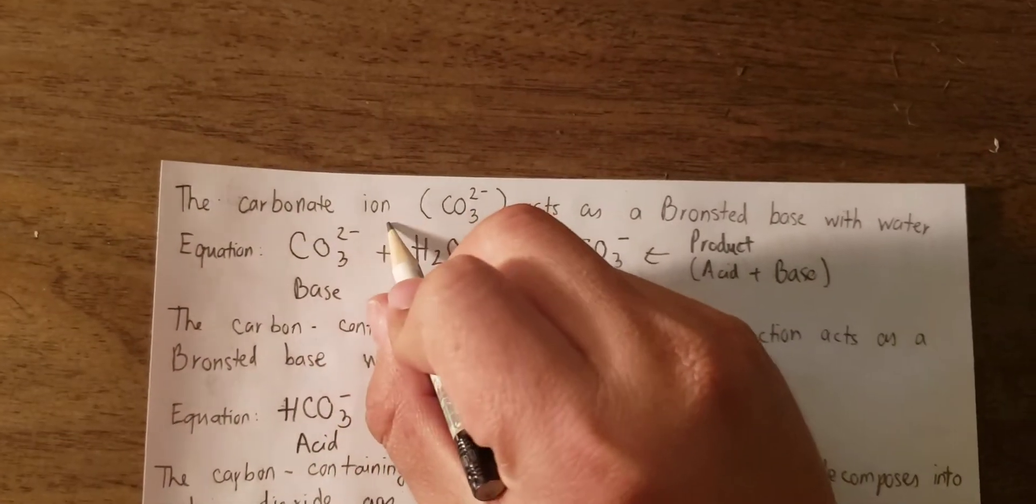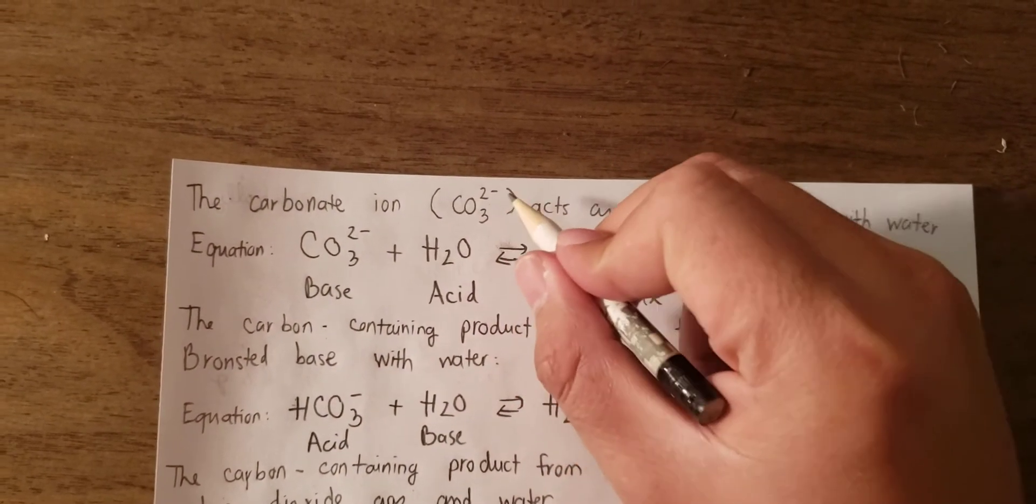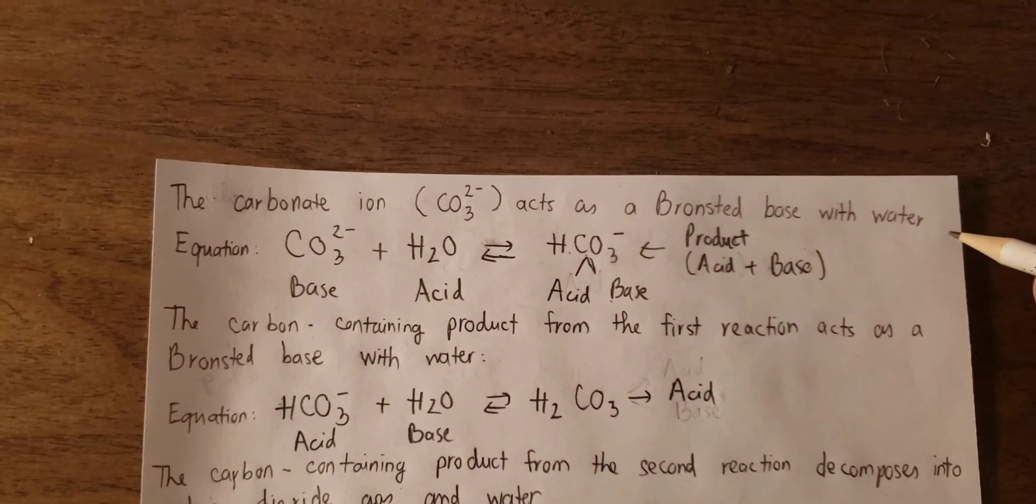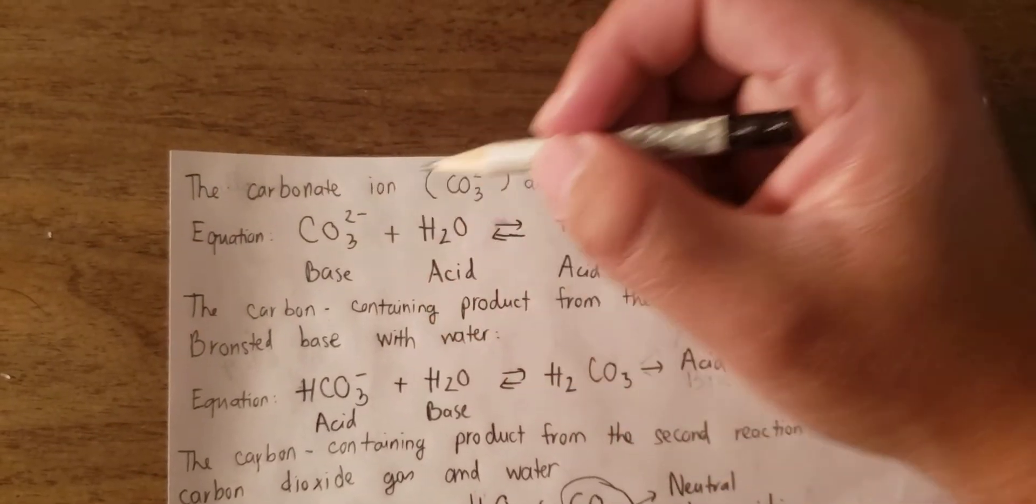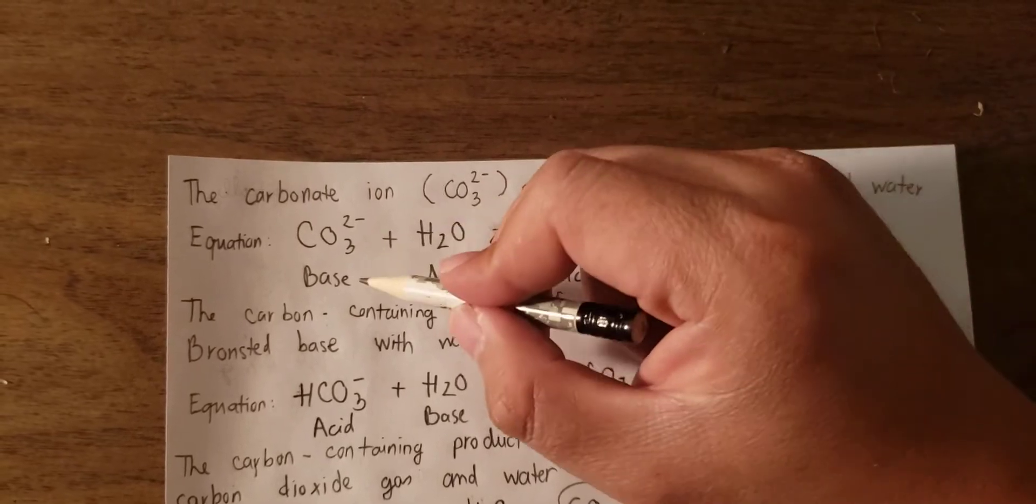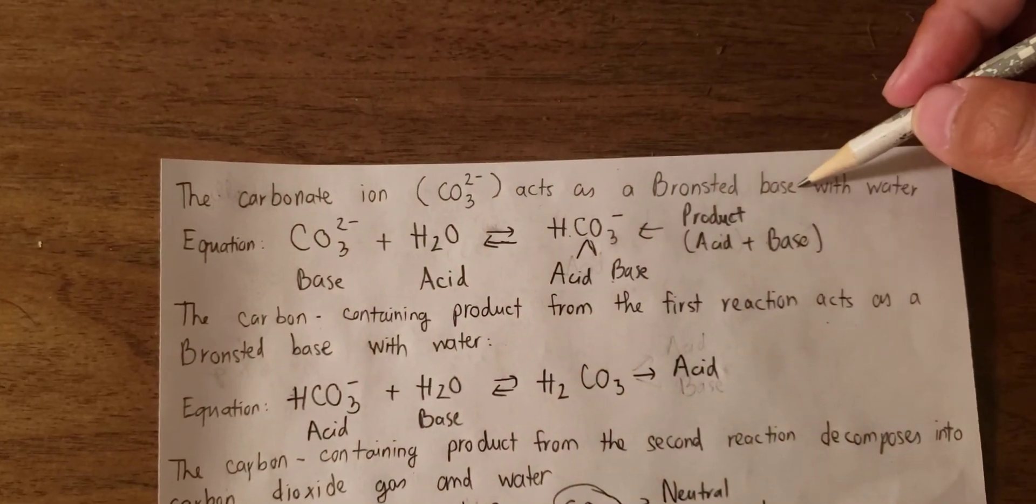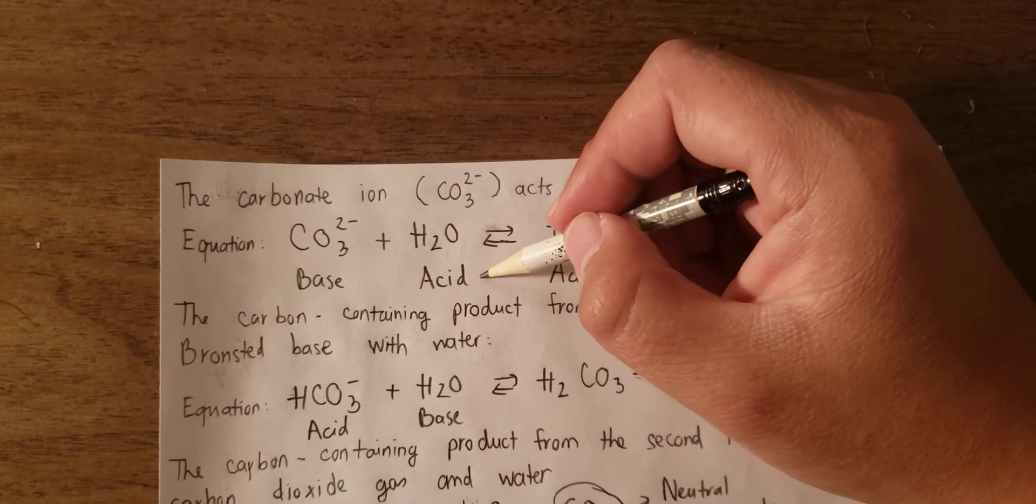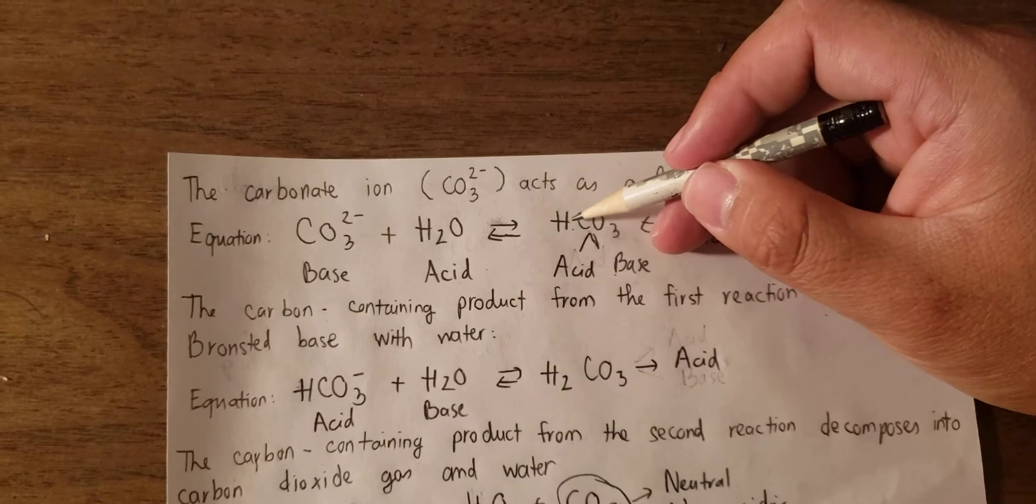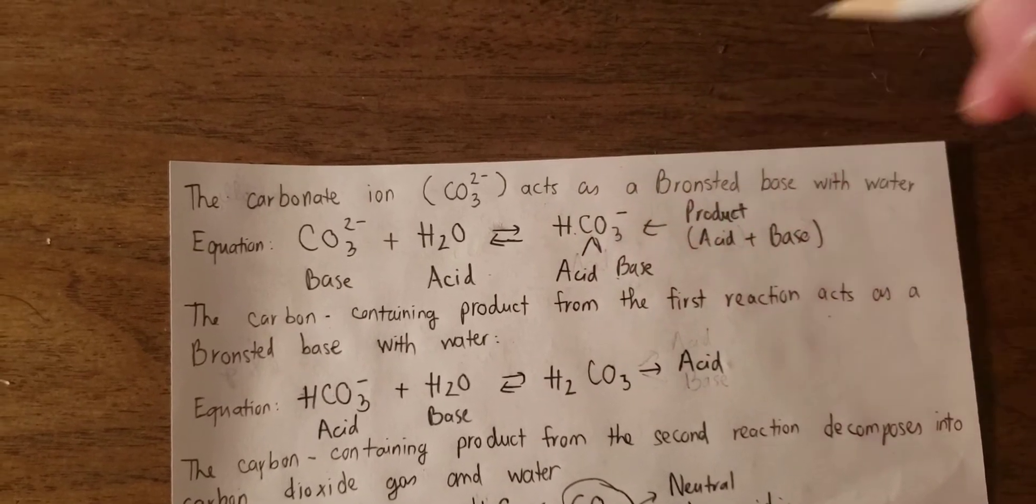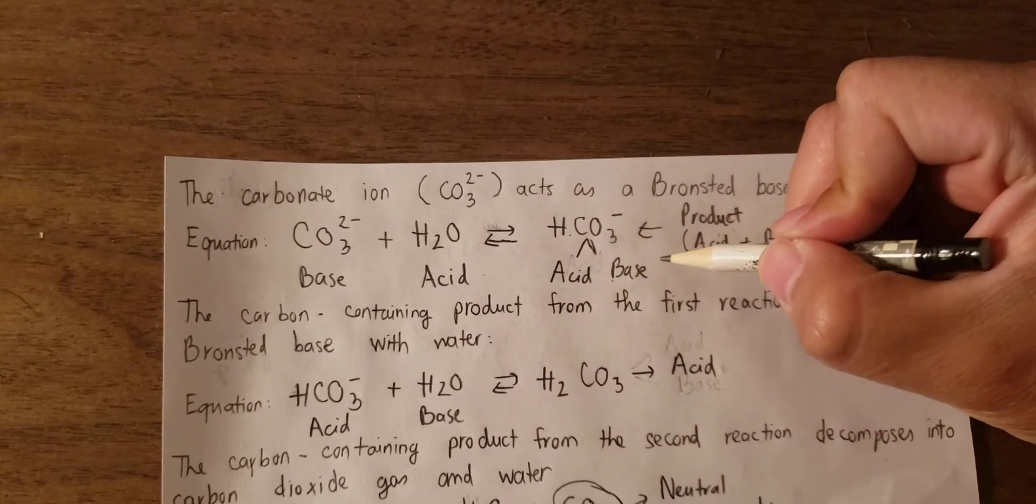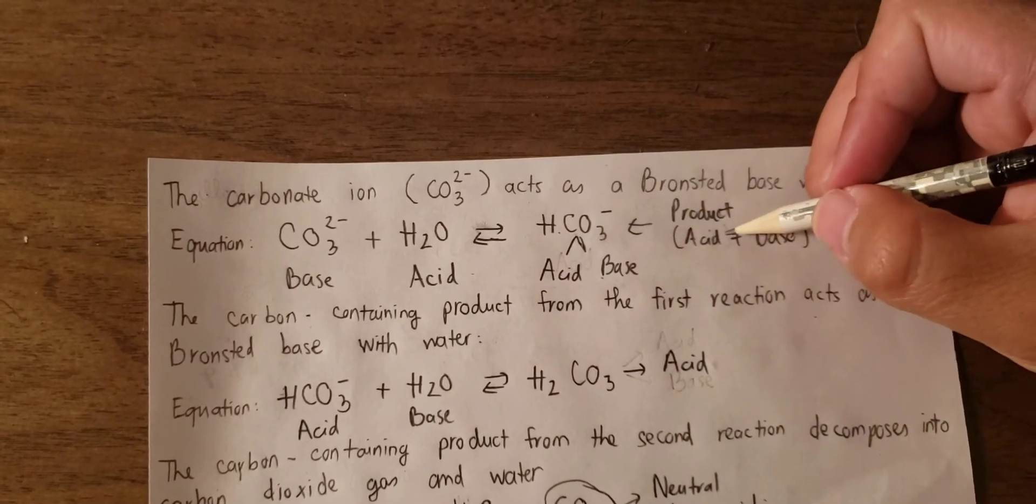The carbonate ion CO3^2- acts as a Bronsted base with water. The equation: CO3^2- (base) + H2O (acid) ⇌ HCO3- (acid base). The carbonate ion is the base and water acts as the acid, producing HCO3-. The products have both acid and base properties.